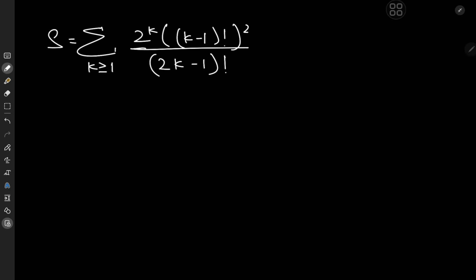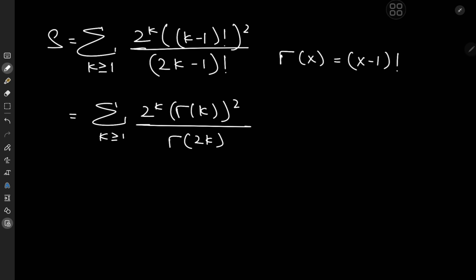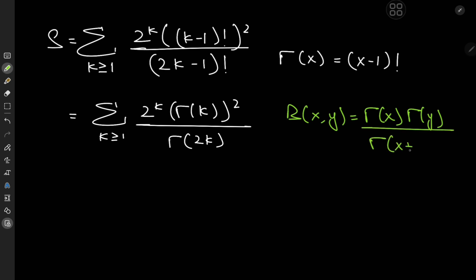Let me begin by writing out all the factorials in terms of gamma functions. We know that gamma of x equals x minus 1 factorial. So I can write my sum as the sum over k of 2 to the k times gamma of k, and we have that thing squared, divided by 2k minus 1 factorial, which would be gamma of 2k. And the reason for introducing the gamma function notation is that it reminds us of a really cool relationship between the gamma and the beta functions. We know that the beta function evaluated at x and y equals gamma x times gamma y divided by gamma x plus y.